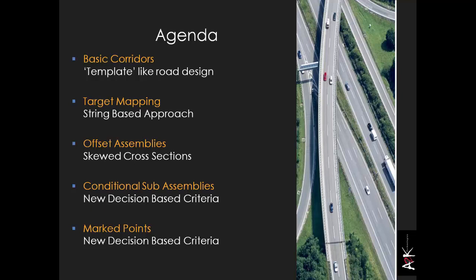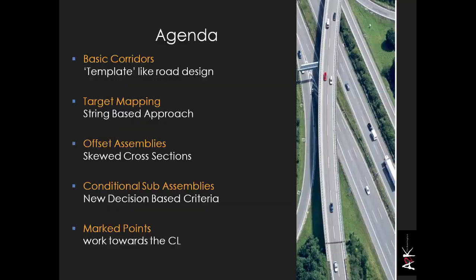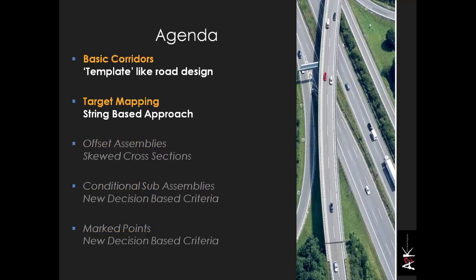Marked points are probably my favourite part of this. They basically allow you to work from the inside out — instead of the standard approach of projecting from your centre line out to the edges, they allow you to work in the opposite direction, which opens up a whole world of possibilities. In general, most users stick with the first two — basic corridors and target mapping will handle all your jobs.